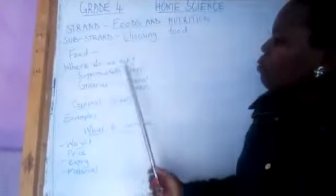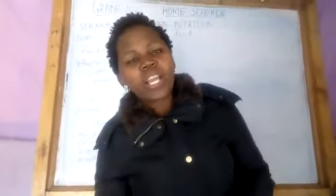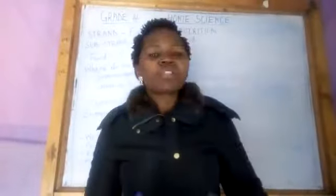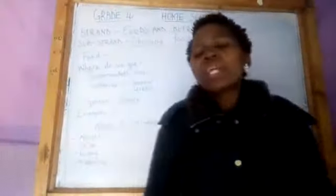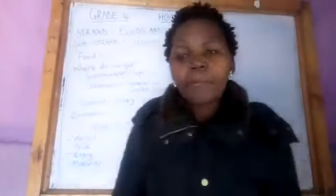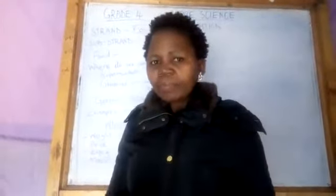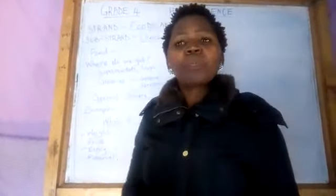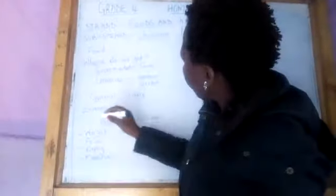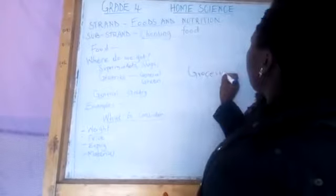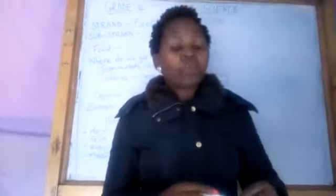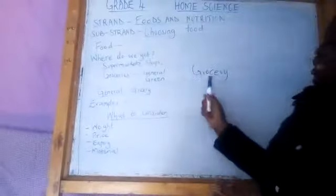Where do we get food from? We buy food from different places. We can get food from a supermarket, from a grocery, from a shop, or from a hotel. Today we are going to concentrate on a grocery — the foods we get from a grocery.